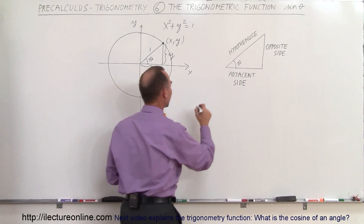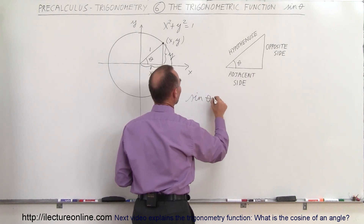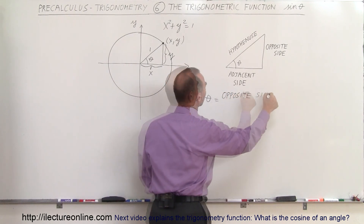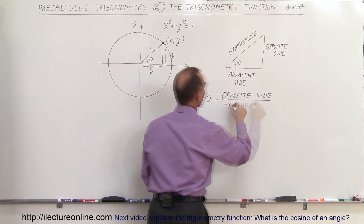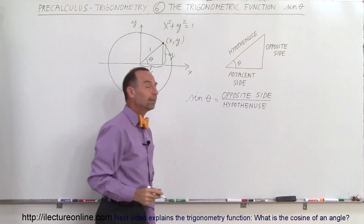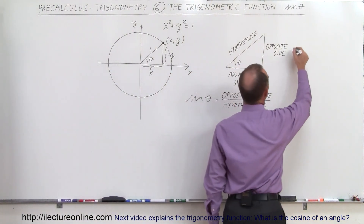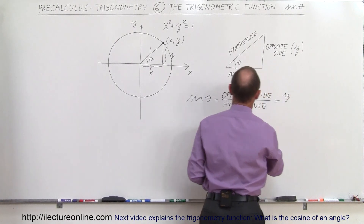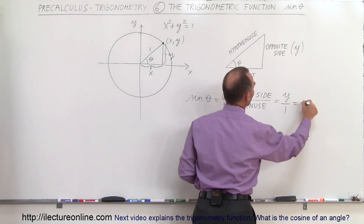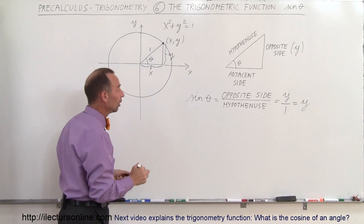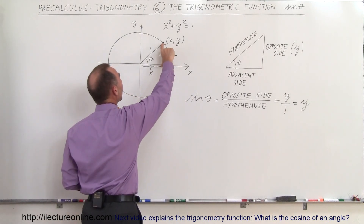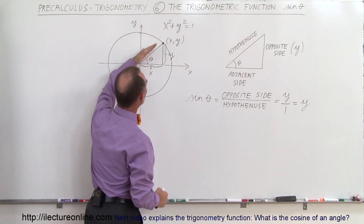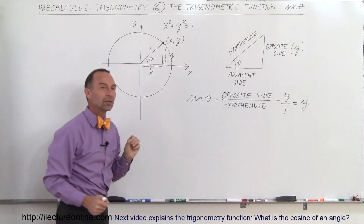The definition of the sine of the angle: the sine is a function defined by the ratio of the opposite side divided by the hypotenuse. Now, the opposite side was equal to the y value of the point along the unit circle. So that's equal to y divided by the hypotenuse, which is 1 — which is simply equal to y. On the unit circle, the sine of theta equals the y value, representing the height from the x-axis to where the hypotenuse touches the unit circle.